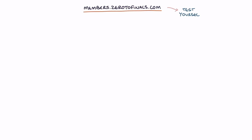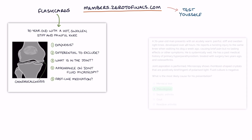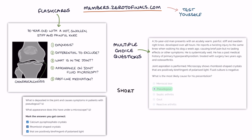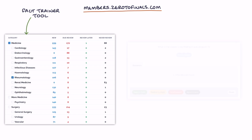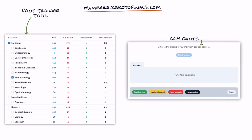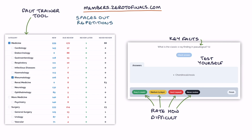Head over to members.zerotofinals.com to test yourself on how much you understood and remembered from this video. The members site contains illustrated flashcards, multiple choice questions and short answer questions designed to complement the Zero to Finals resources. It also features an Anki-like fact trainer tool using spaced repetition, which helps ensure key facts stay in your long-term memory. A link to the members site is in the video description.